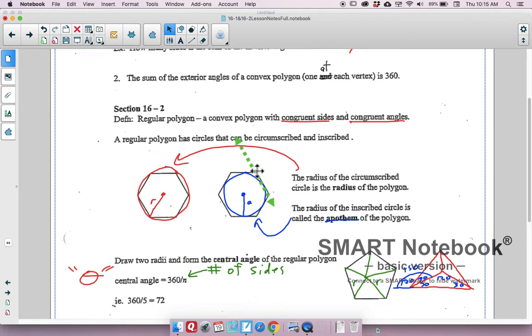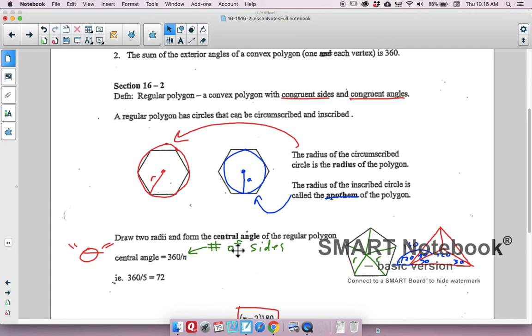Section 16-2. A regular polygon has circles that can be circumscribed and inscribed. So, obviously, in red here, on the left, the radius, this is a circle that's circumscribed, right? So, the radius of the circumscribed circle is what we call the radius of the polygon. Radius of the polygon would just mean it's the same as the radius of the circumscribed circle around that polygon. The radius of the inscribed circle here in blue is called the apothem of the polygon. So you have the radius of the polygon, you have what we call the apothem.